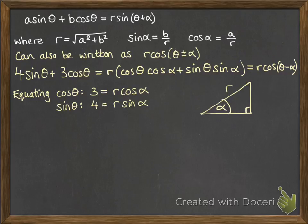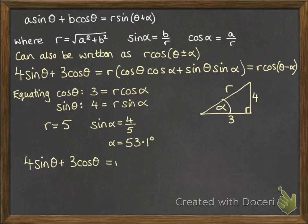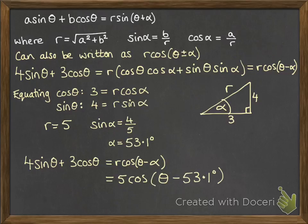And then from there, thinking about our triangle, we can put the sides on as 4 and 3 again, in the same way that we did before. So again, we've got r equals 5. Sine alpha will be 4 over 5. So alpha is 53.1 degrees. So for this case, we can write it as r cos theta minus alpha, where r is 5, and alpha is 53.1 degrees.